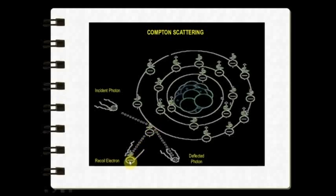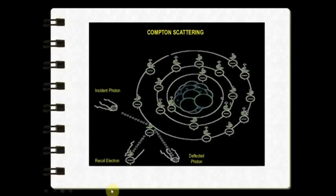The incident photon recoils the electron from its orbit — this is how the recoil electron gets emitted. The incident photon then ceases to exist and gets deflected in a different path. The net effect is that the energy of the scattered photon equals the energy of the incident photon minus the sum of the kinetic energy gained by the recoil electron and its binding energy. Compton scattering comprises around 57 percent of interactions in the dental x-ray beam exposure.